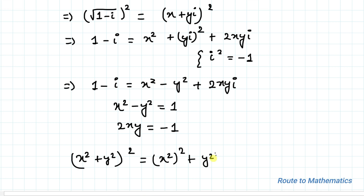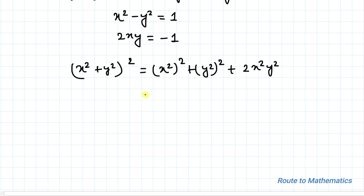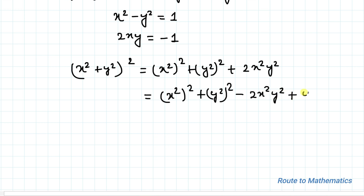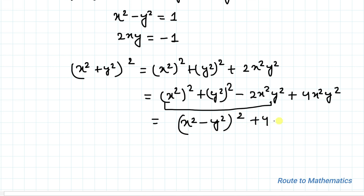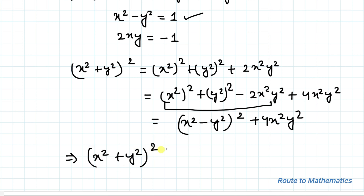Now we use the identity: (x² + y²)² = (x² - y²)² + 4x²y², which expands from (x²)² + (y²)² + 2x²y². We can rewrite 2x²y² as (x²-y²)² - 2x²y² + 4x²y², giving (x² + y²)² = (x² - y²)² + (2xy)². Substituting x² - y² = 1, we get (x² + y²)² = 1² + (2xy)².